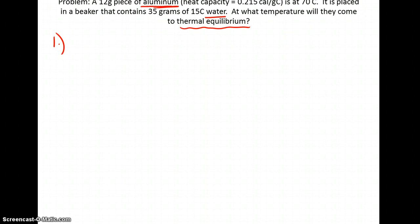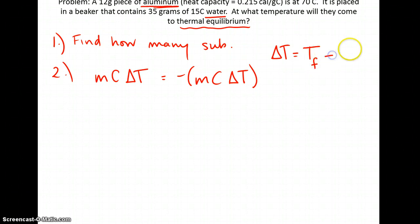We know we need to set up the equation where you have those two equaling each other. First step, find how many substances. We have found two. So for that reason, we know that we need to do MC delta T equals negative MC delta T. Just a reminder, delta T equals the final temperature minus the initial temperature. F stands for final, I stands for initial.